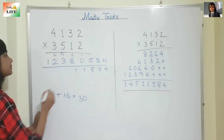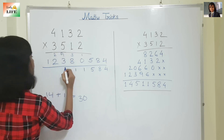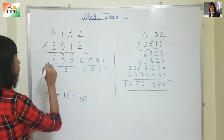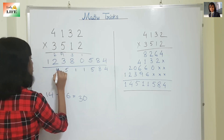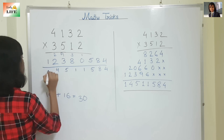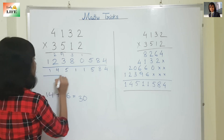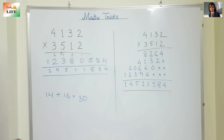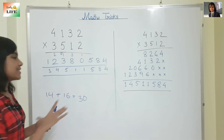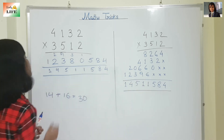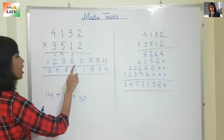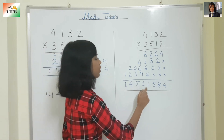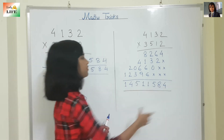3 — right. 3, 4, 5. 2 plus 2 is 4, and 1. So you can see the same answer: 1, 4, 5, 1, 1, 5, 8, 4 — 14511584. This is the verified answer.